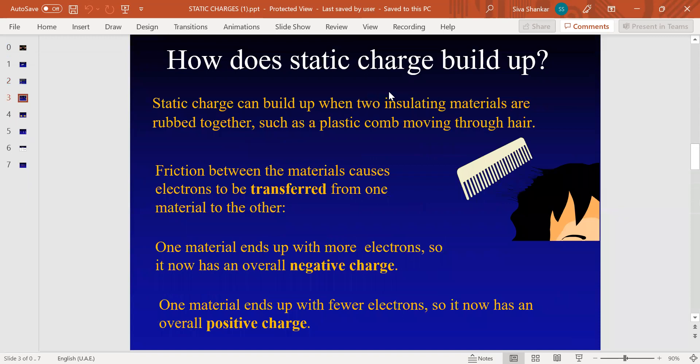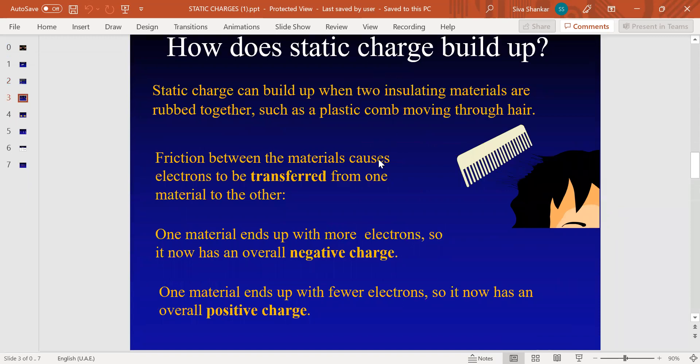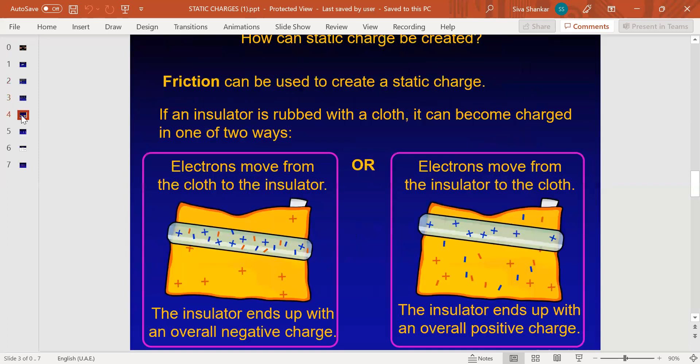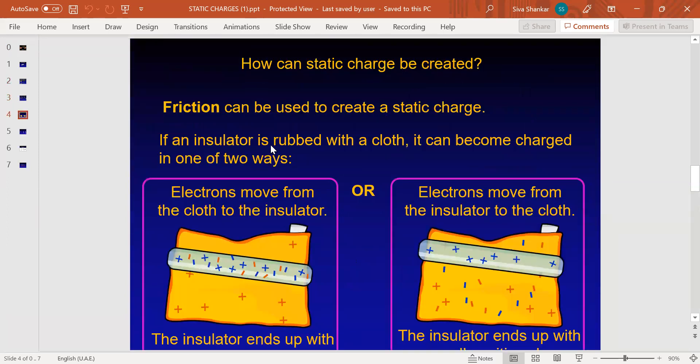Now we will see how static charges build up. Static charges build up in insulation materials by rubbing together, like a plastic comb moving through hair. Friction between materials causes electrons to be transferred from one material to another. One material ends up with more electrons, giving it a negative charge, and the other material ends up with fewer electrons, giving it an overall positive charge.